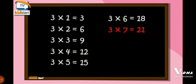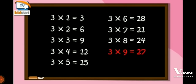Three sevens are twenty-one. Three eights are twenty-four. Three nines are twenty-seven. Three tens are twenty-nine.